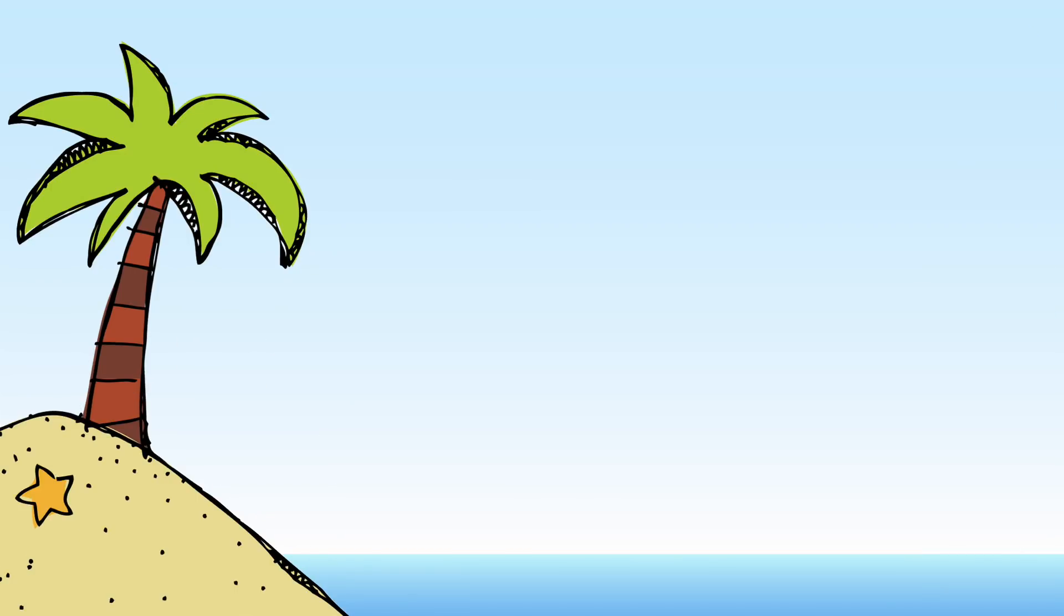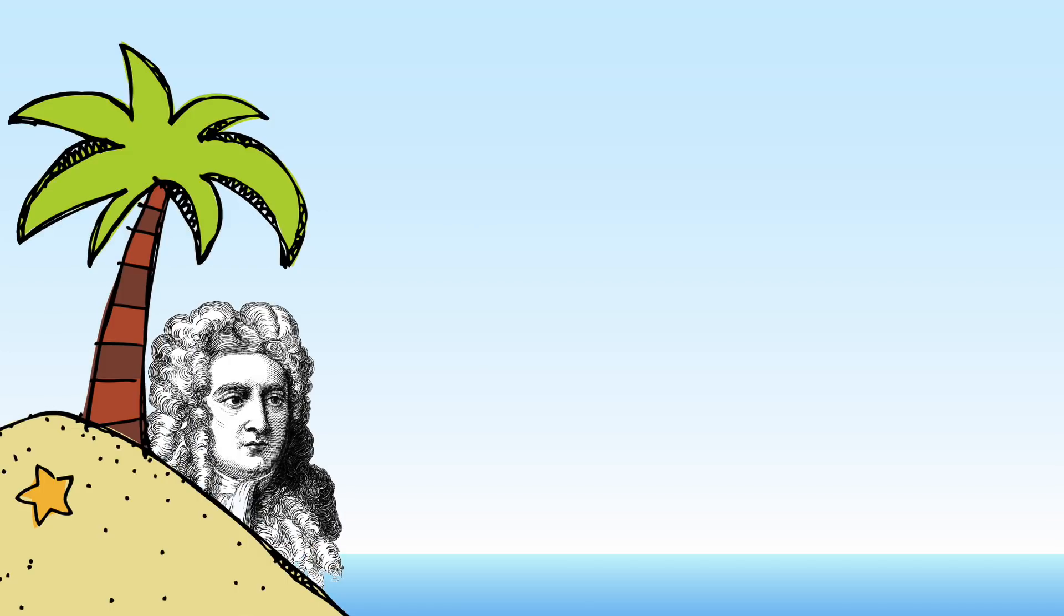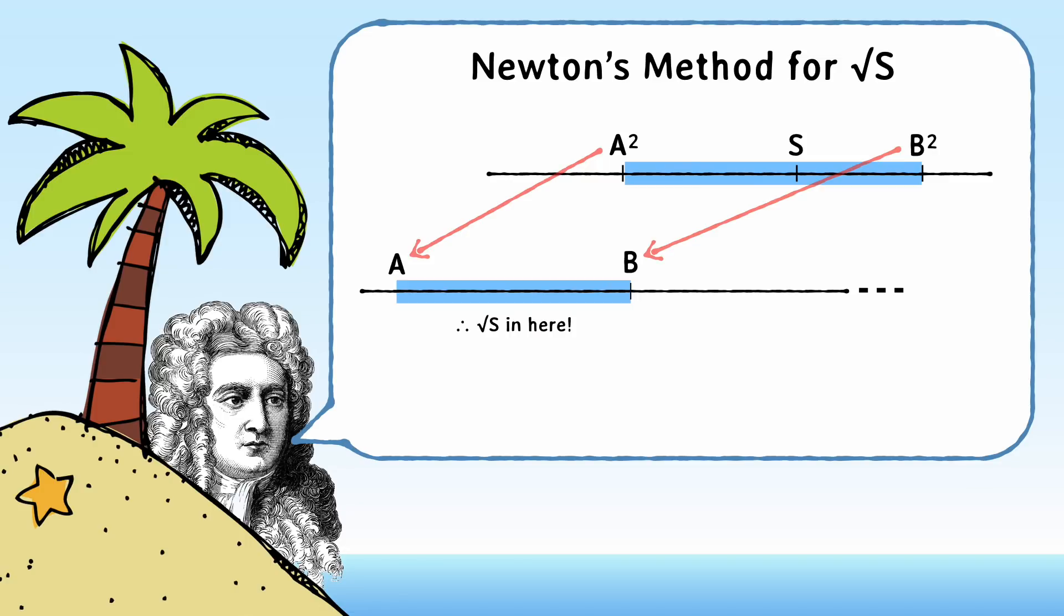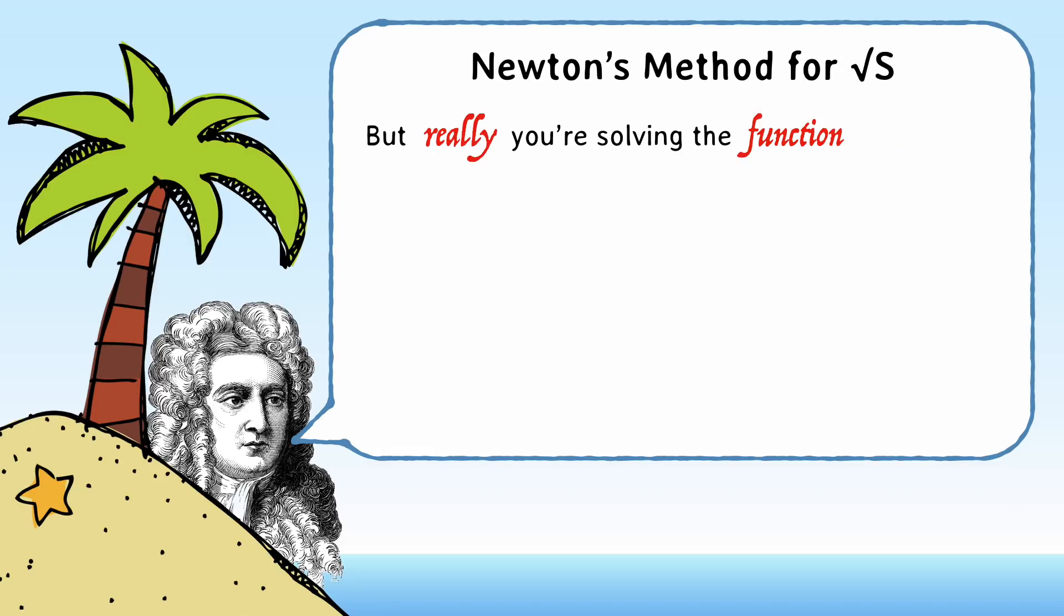Now, if you happen to share your desert island with Sir Isaac Newton, what? It could happen. Anyway, Newton would say, actually, what you should do is use some calculus. You start in the same way. You find a couple of bracketing perfect squares to make your first estimate. But then realize you're actually solving for the roots of a function. f(x) is equal to x squared minus s. So find the derivative of that function.